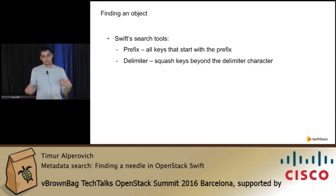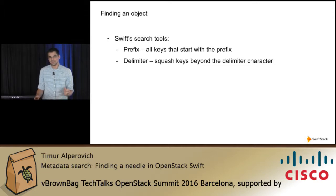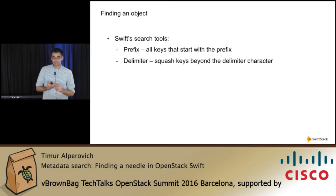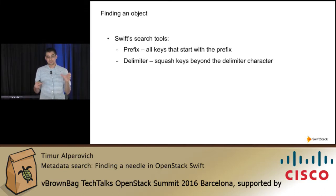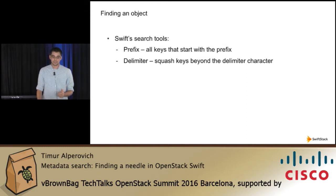Unfortunately, when we look at Swift today, the search functionality is fairly limited. You can specify a prefix and a delimiter. A prefix restricts results to all keys starting with a given string, and a delimiter is a way to collapse the keys.